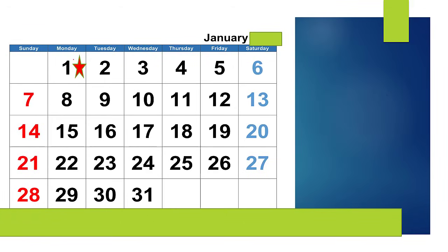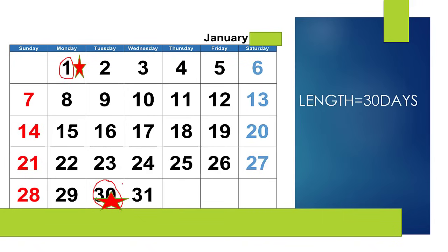Now we will do another example to calculate the length of cycle. For example, if someone has periods starting on 1st January, mark this date on your calendar. Count up to the 1st day of your next cycle. If the 1st day of the next cycle is 30th January, then the length of the cycle will be 30 days.